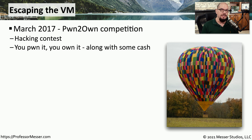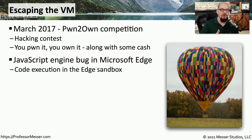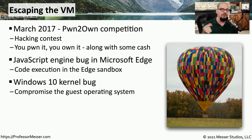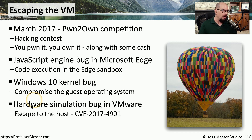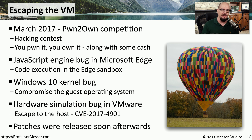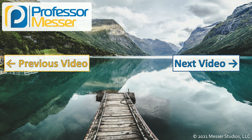An example of a VM escape occurred in 2017 at a security conference during a Pwn2Own competition — effectively a hacking contest where if you can control and gain access to a system, you get to take it home. A user was able to perform a VM escape by combining multiple exploits together. The first exploit was a JavaScript engine bug in Microsoft Edge that allowed for code execution in the sandbox of the Edge browser. From there, they took advantage of a kernel bug inside of Windows 10, which compromised the guest operating system on that virtual machine. Then they exploited a hardware simulation bug in the VMware software and were able to escape to the host. This was a significant security concern, and the bug was patched very quickly after it was discovered at the Pwn2Own competition.